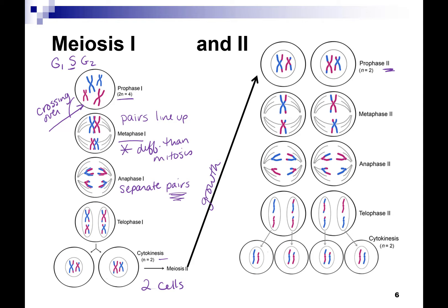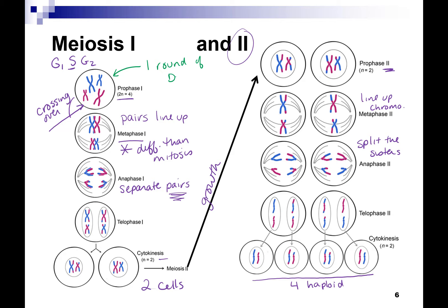Now in metaphase II, you line up the chromosomes just like you did in mitosis and you split the sisters. Meiosis II looks very much like mitosis, except that you're following two cells instead of one. You're going to result in four haploid cells after telophase II and cytokinesis. What's important is you have one round of DNA replication and two rounds of cell division.